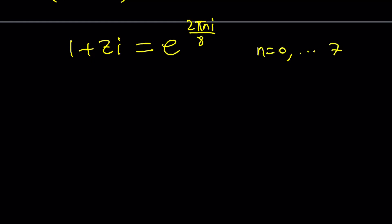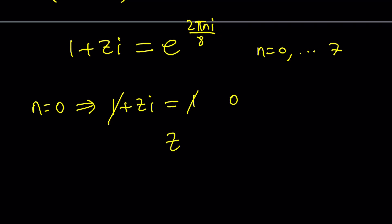Let's start at n = 0. You can go from 1 through 8 as long as you use only eight values, but starting at zero is fun. If n = 0, we get 1 + zi = 1, so zi = 0. Since i does not equal zero, Z must be zero. And of course, if Z = 0, then 1 to the eighth power equals 1 — everybody knew that.